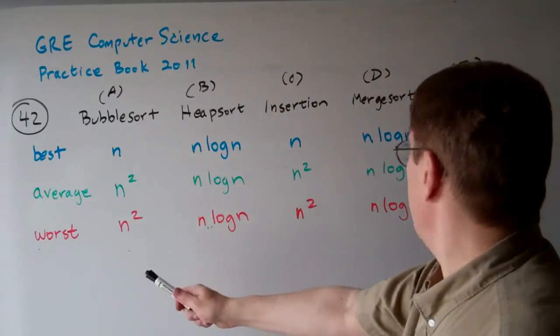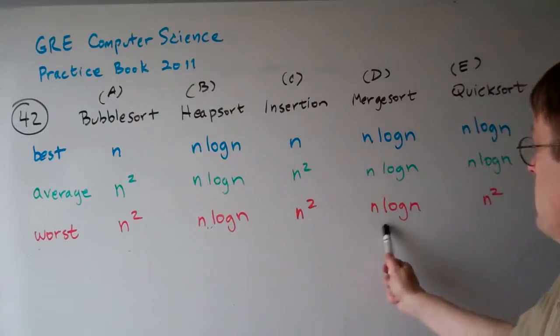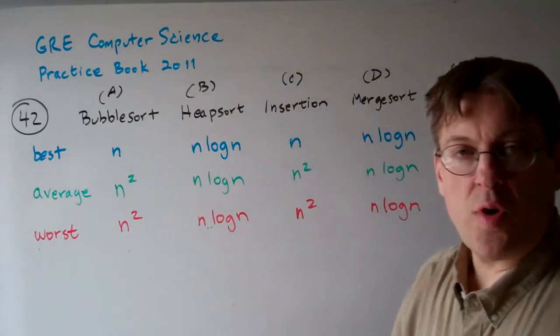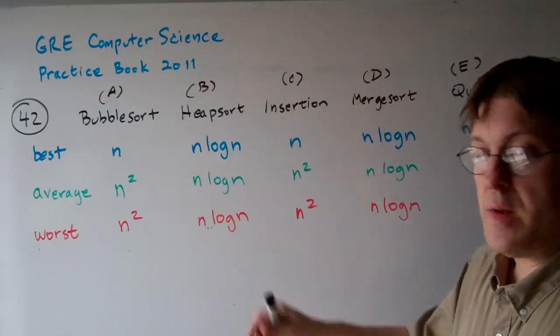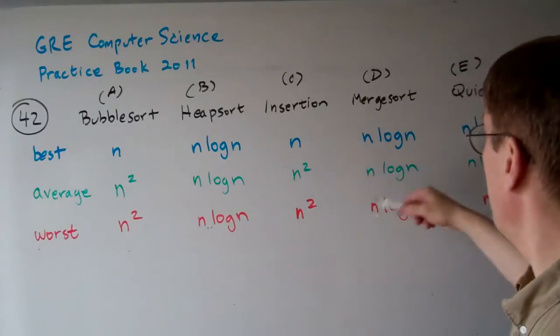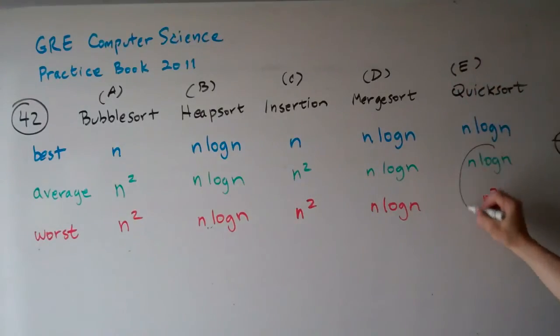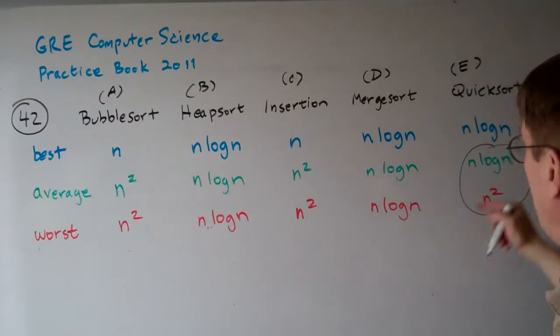in all cases, average divided by worst is one. They're the same. The average case and the worst case are the same, except for quicksort.